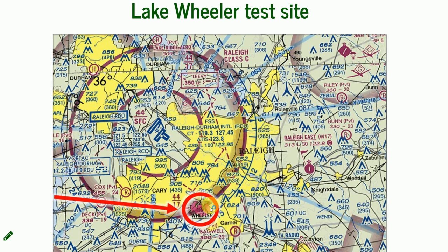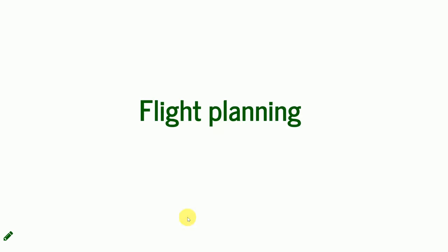This is Raleigh, this is RDU, and here I have outlined where the COA is and where Lake Wheeler is. So this is us — the pink area here is the whole COA.